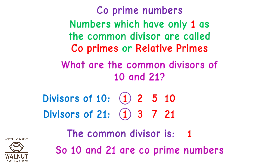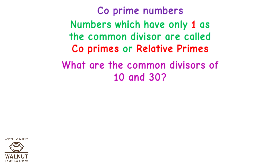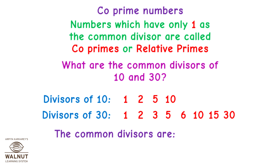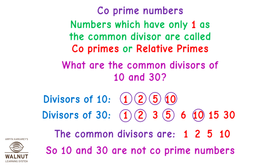So 10 and 21 are co-prime numbers. What are the common divisors of 10 and 30? Divisors of 10 are 1, 2, 5 and 10. Divisors of 30 are 1, 2, 3, 5, 6, 10, 15 and 30. The common divisors are 1, 2, 5 and 10. So 10 and 30 are not co-prime numbers.